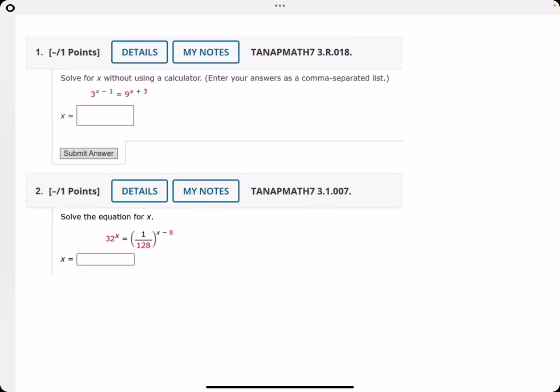Starting with number 1, solve for x without using a calculator. The approach here is to make the bases match on both sides. So we can leave this as 3 to the x minus 1, but we're going to change the right side from 9 to 3 squared.